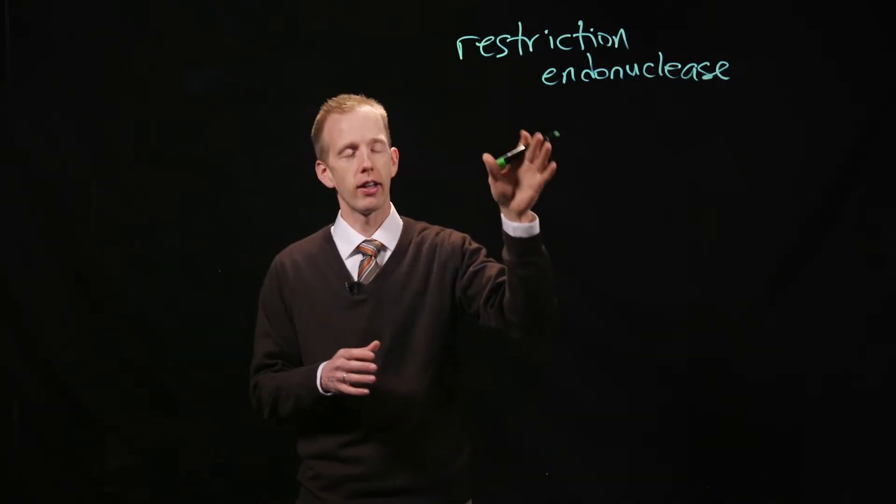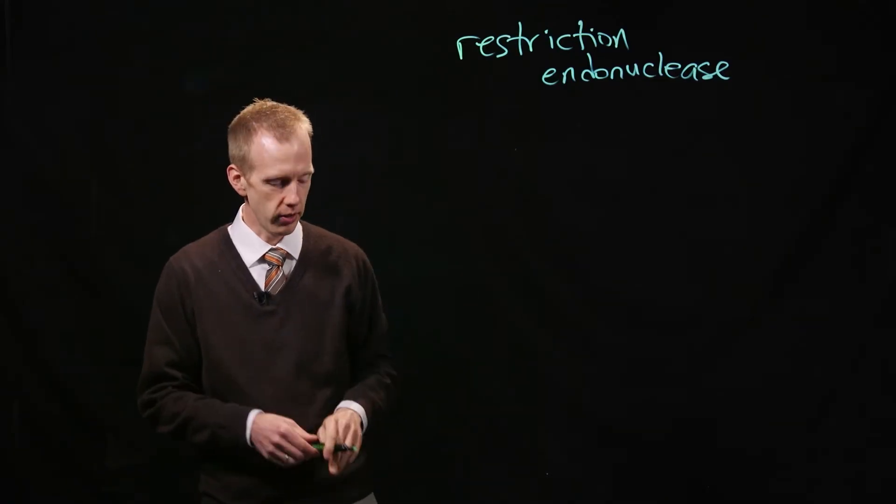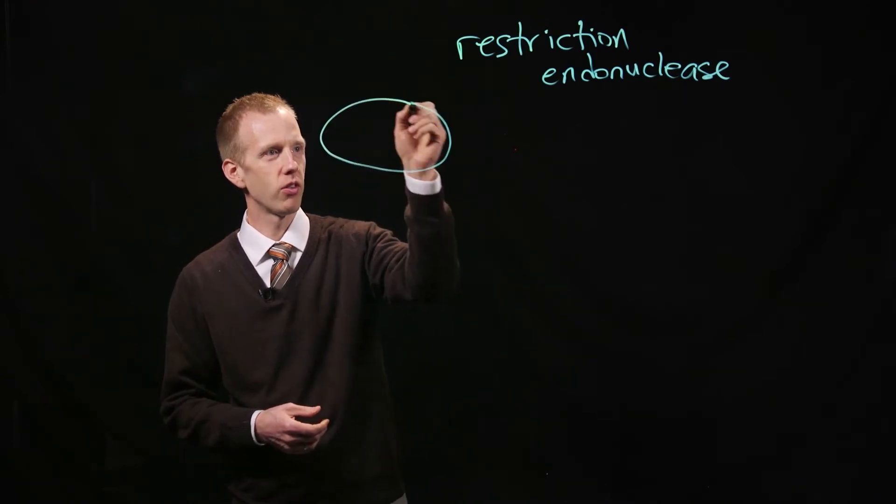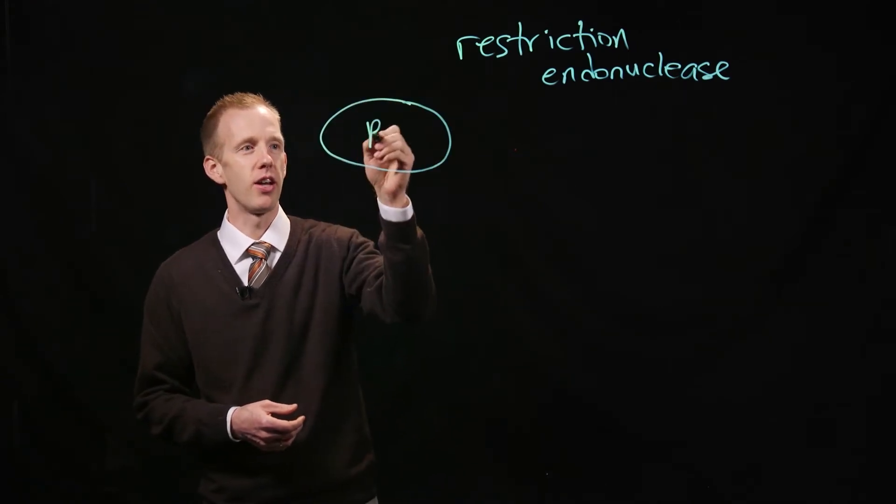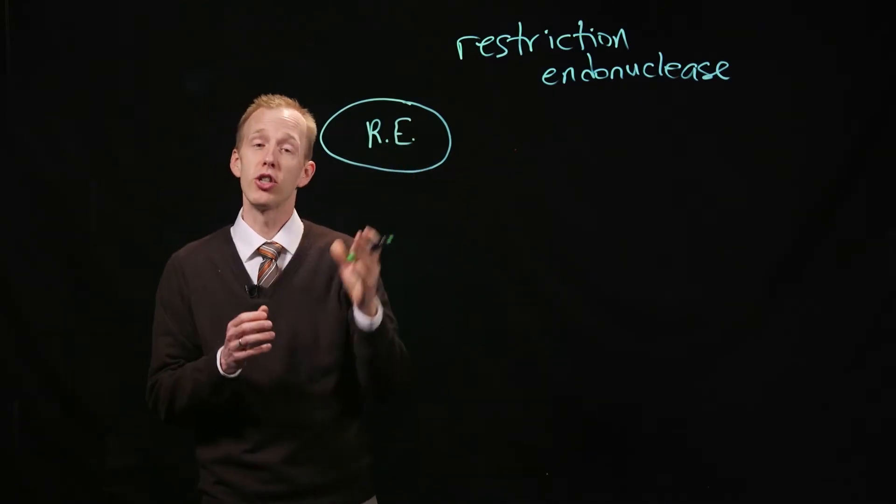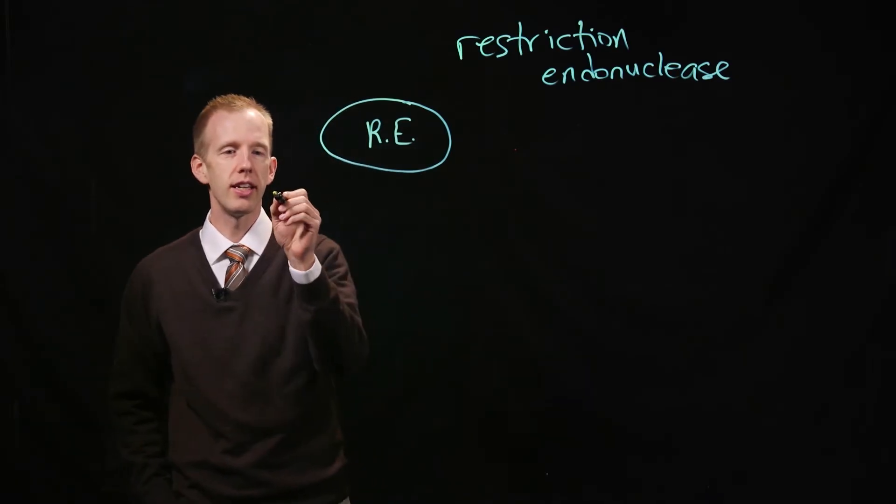These bacteria have a class of enzymes called restriction endonucleases. What these enzymes do—I'll have a blob here representing the protein—is they recognize specific DNA sequences.